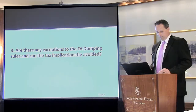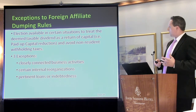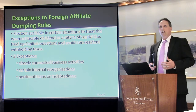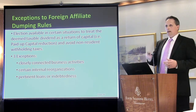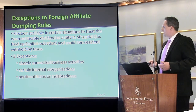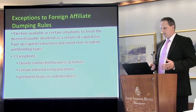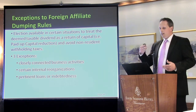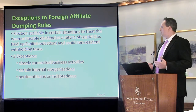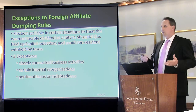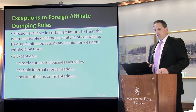The exceptions to the rules: one that can be complicated is an election you can make that would deem the amount that is a deemed dividend to actually be just a return of capital to the foreign parent. When that money is being repatriated back to the foreign parent, you can say that you're simply reducing your cost basis in the shares that the foreign corporation holds of the Canadian company and the Canadian company holds of the foreign affiliate. This defers any income or gain until you actually sell the foreign affiliate, rather than it happening immediately.